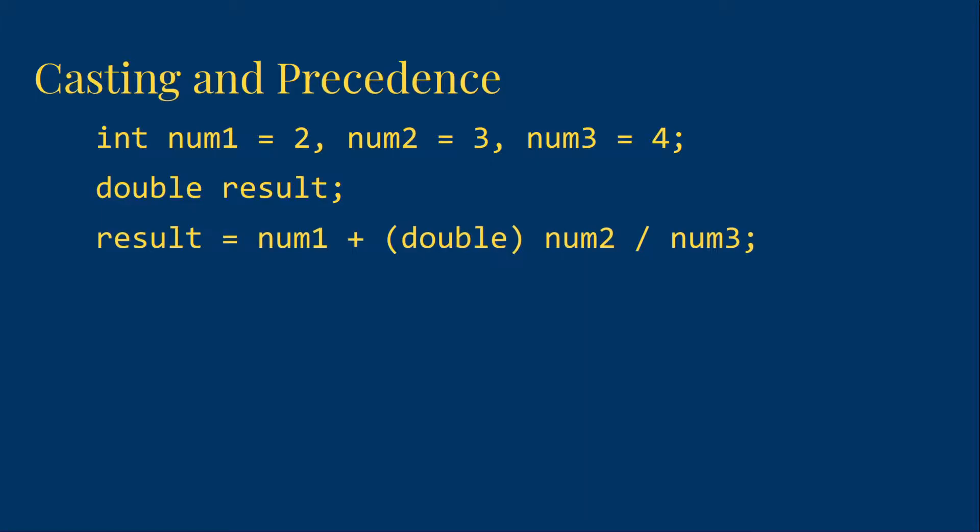The correct way to deal with this is to actually put the cast directly onto either num2 or num3. You could cast both, but you don't need to. As long as you cast one of them, it will all be good. So we can put it right before num2 or we can put it on num3. If we do that, then we'll get the floating point division we were looking for, and then we can add the two. That will all work correctly, and we end up with 2.75.